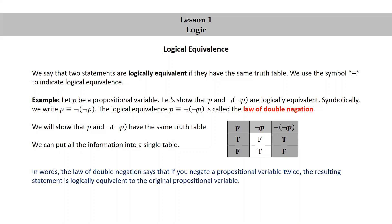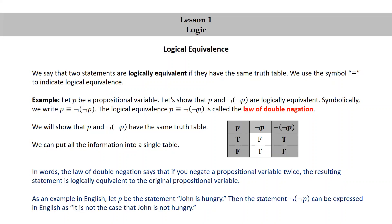In words, the law of double negation says that if you negate a propositional variable twice, the resulting statement is logically equivalent to the original propositional variable. As an example in English, let p be the statement 'John is hungry.' Then the statement not not p can be expressed in English as 'it is not the case that John is not hungry.' By the law of double negation, these two statements are logically equivalent.